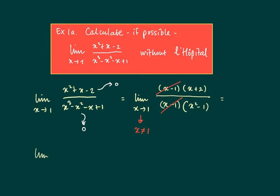Because when we take limits, we assume implicitly that x does not assume the value x equals 1. So we can rewrite the limit as follows.